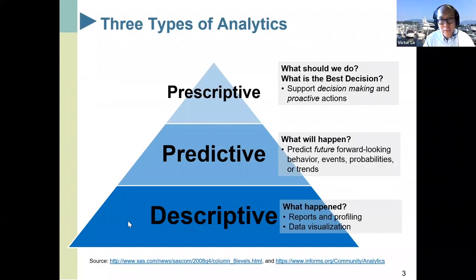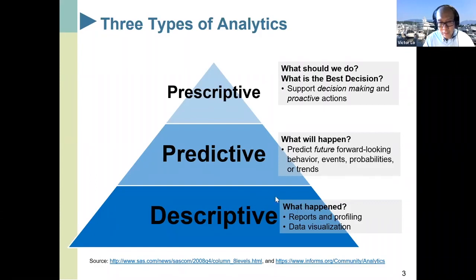There are three kinds of analytics: descriptive, predictive, and prescriptive. The first level is descriptive — it's about what happened in the past, things like business reports, statistical tests, and data visualization. The second level is predictive, which is about predicting the future or something you don't know yet — more forward looking. The third level is prescriptive: if you know something about the future, would that influence your decision and improve your action? So prescriptive supports decision making.